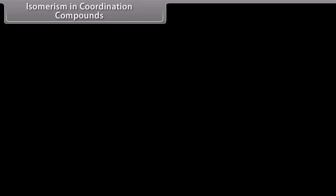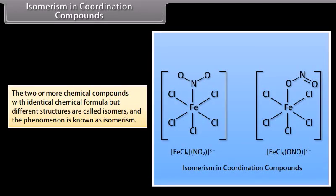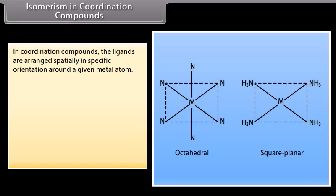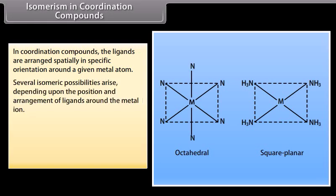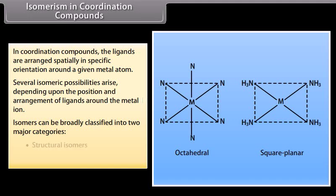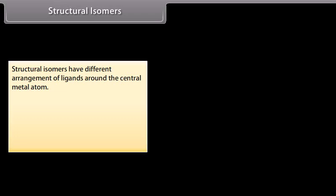Isomerism in Coordination Compounds: Two or more chemical compounds with identical chemical formulas but different structures are called isomers, and the phenomenon is known as isomerism. In coordination compounds, ligands are arranged spatially in specific orientations around a given metal atom. Several isomeric possibilities arise depending upon the position and arrangement of ligands around the metal ion. Isomers can be broadly classified into two major categories: structural isomers and stereoisomers.